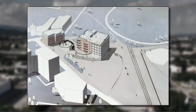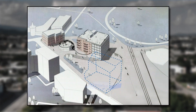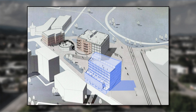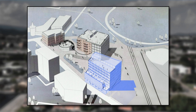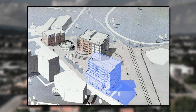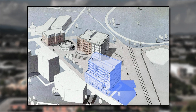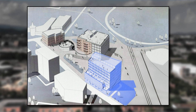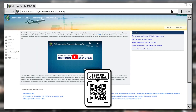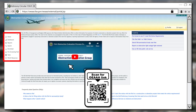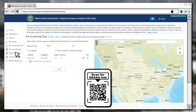When the location and height of a proposed construction project is known, it is crucial for a proponent to determine if a submission is required. The FAA Notice Criteria Tool, located on the OEAAA website, provides a means to do this. Scan the QR code to access the website.